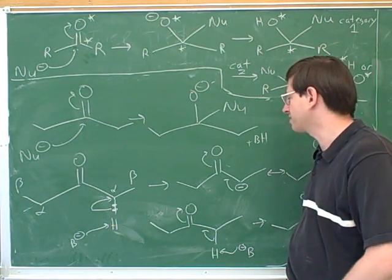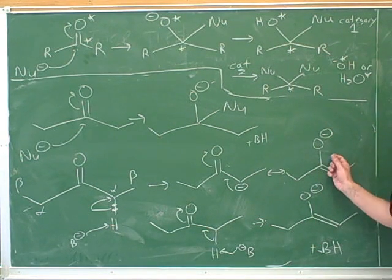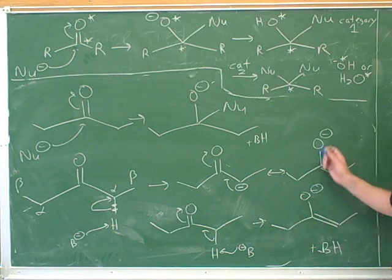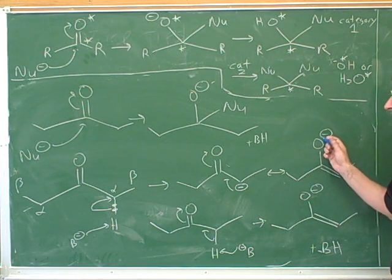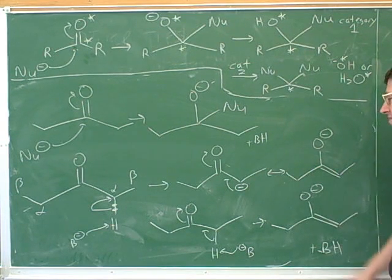This is a case where, unfortunately, the instructors tend to draw it in a way that's not too helpful. Instructors actually prefer this resonance structure because the negative charge prefers to be on the electronegative atom. However, it's easier to predict the reaction if you draw it this way, and they'll give you full credit either way.